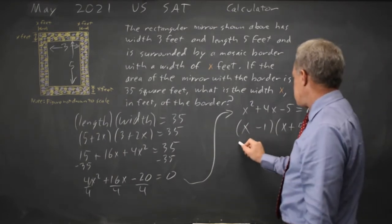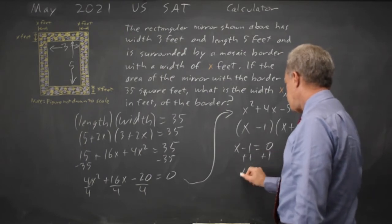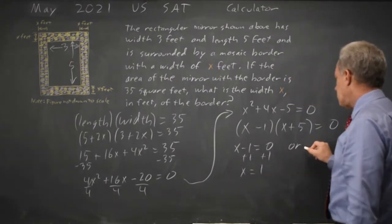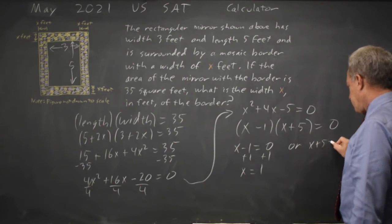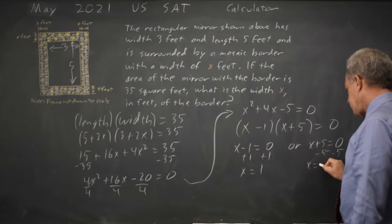If this product is zero, either X minus 1 equals zero, so X equals 1, or X plus 5 equals 0, so X equals negative 5.